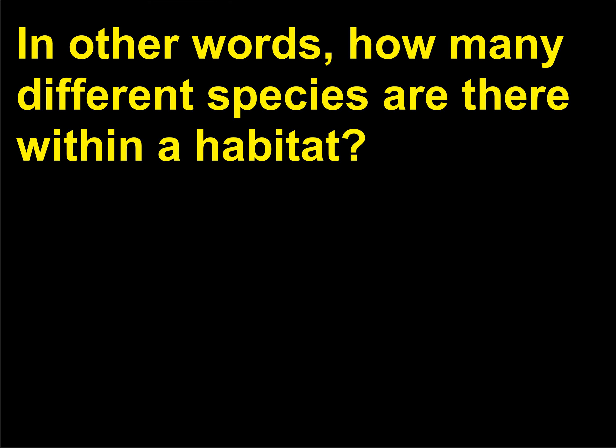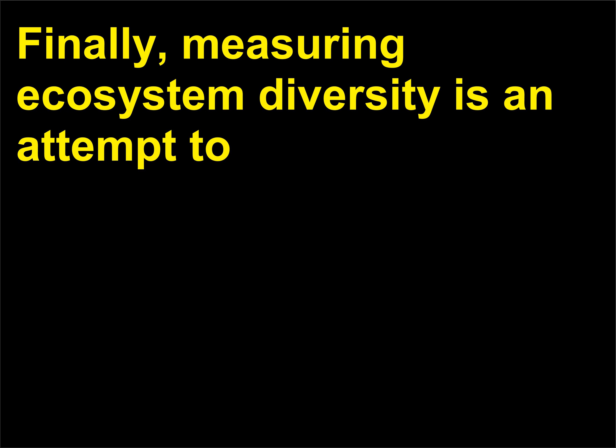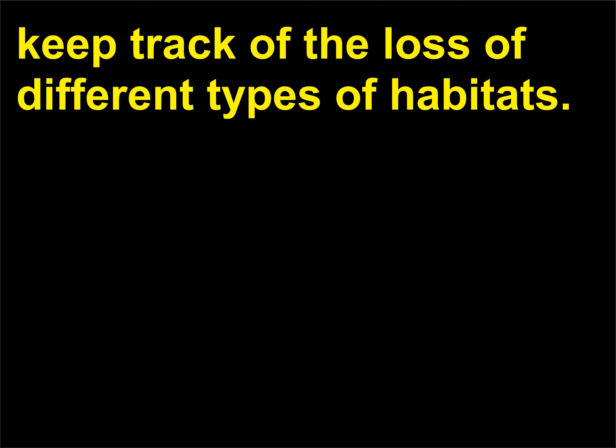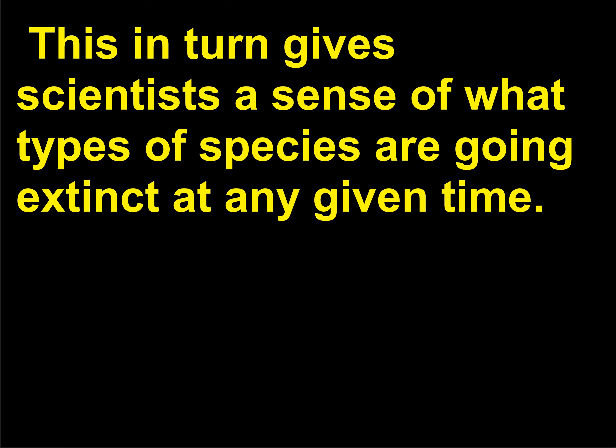In other words, how many different species are there within a habitat? Measuring ecosystem diversity is an attempt to keep track of the loss of different types of habitats. This in turn gives scientists a sense of what types of species are going extinct at any given time.